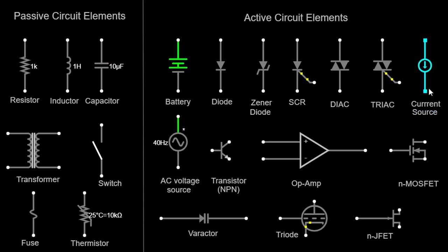A current source is an active component that provides a constant current output regardless of changes in the circuit parameters or load. It is represented by a circle with an arrow pointing inward or outward, indicating the direction of current flow. An AC voltage source is a device that generates an alternating current (AC) signal with a specific voltage and frequency, represented by a sine wave or a circle with a squiggly line inside. A transistor is a three-terminal semiconductor device used for amplification and switching. An NPN transistor is a type of bipolar junction transistor (BJT) where majority current carriers are electrons, represented by three layers with an arrow pointing inward on the emitter side.